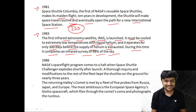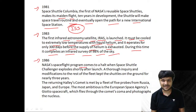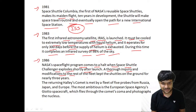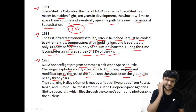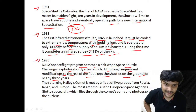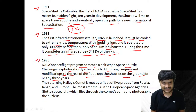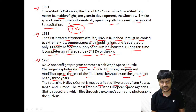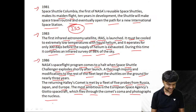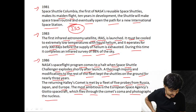In 1986, NASA's space flight program comes to a halt when Space Shuttle Challenger explodes shortly after launch. A thorough inquiry and modifications to the rest of the fleet kept the shuttles on the ground for nearly three years. Also in 1986, the returning Halley's comet is met by a fleet of five probes from Russia, Japan, and Europe — the most ambitious being ESA's Giotto spacecraft, which flew through the comet's coma and photographed its nucleus.